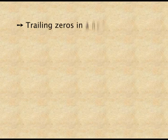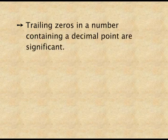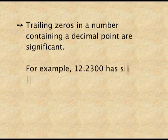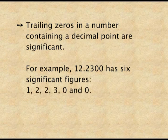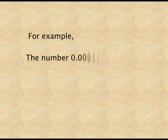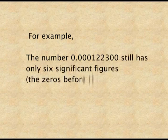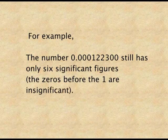Trailing zeros in a number containing a decimal point are significant — that is, all zeros after the decimal are significant. For example, 12.2300 has six significant figures, because the two trailing zeros after the decimal are also significant. Similarly, 0.000122300 still has only six significant figures because all the zeros before 1 are insignificant. We must follow all these rules when writing significant figures.